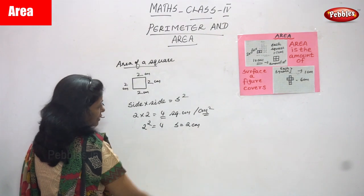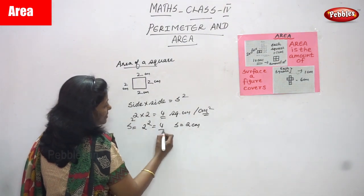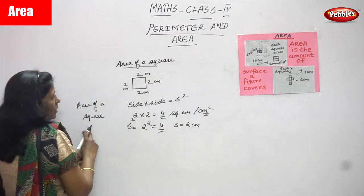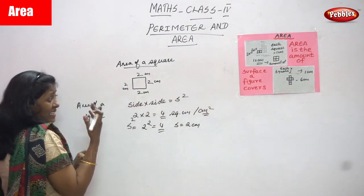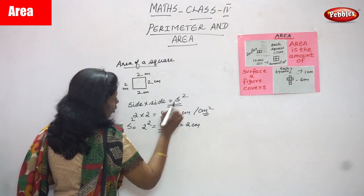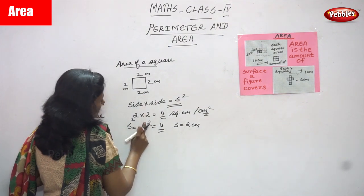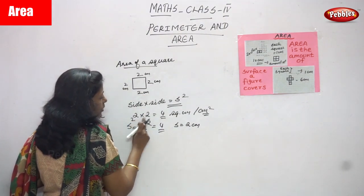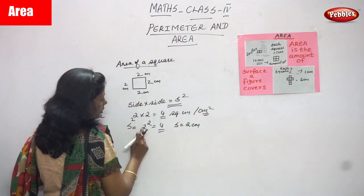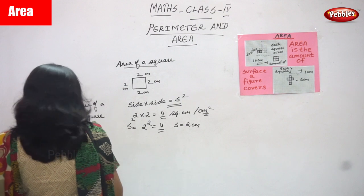Each side is equal to two centimeters, so side into side means two into two, which gives you four square centimeters. The answer is four square centimeters — or you can write it as square centimeters or centimeter square. That is the exact answer. You can write side into side or s squared — whichever is convenient for you.